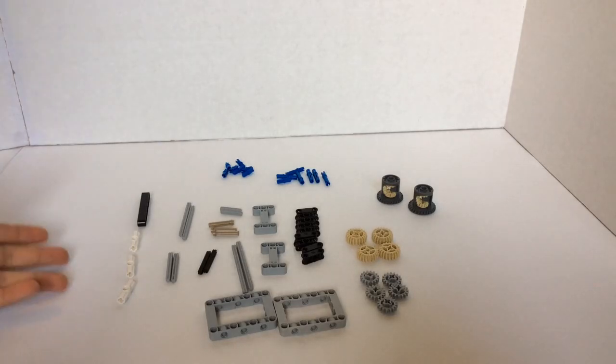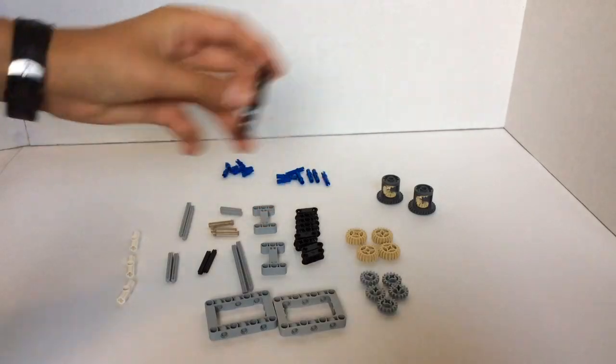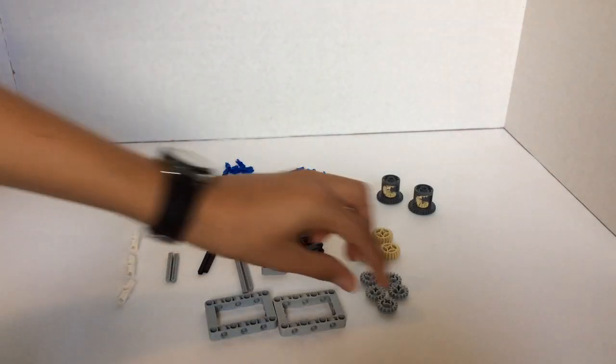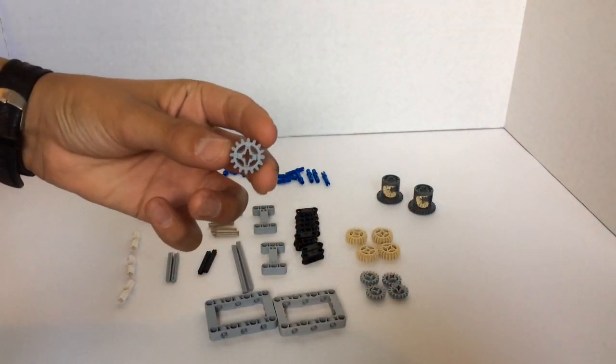So here's all the pieces you'll need. You'll need one 7-stud beam, five 12-tooth gears,